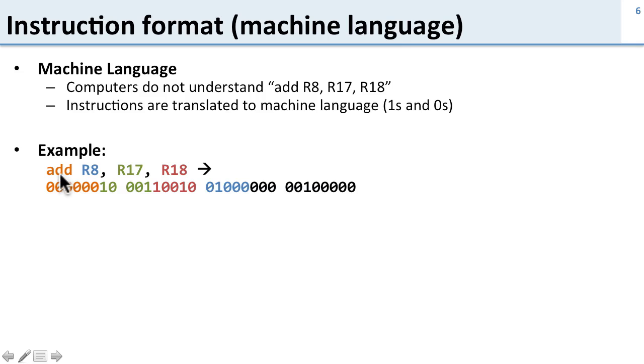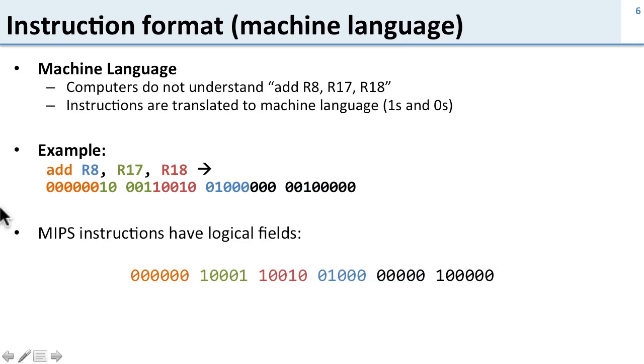These bits here correspond to add, these bits correspond to this register, these bits to that register, and so on. This color-coding gives you a hint that there's some logical distinction going on. In fact, in MIPS instructions we have logical fields.